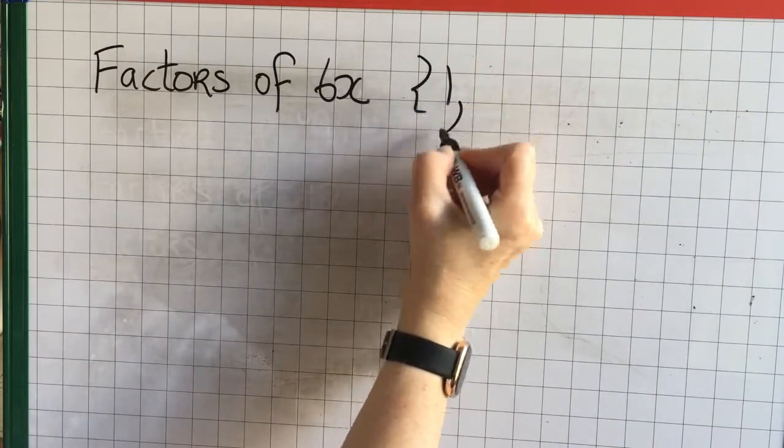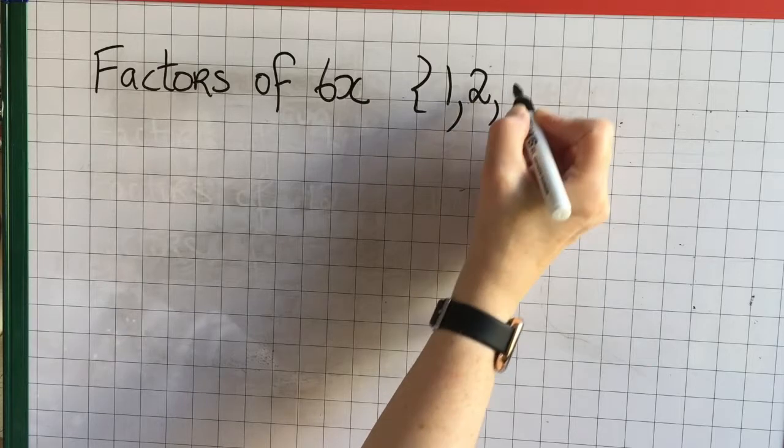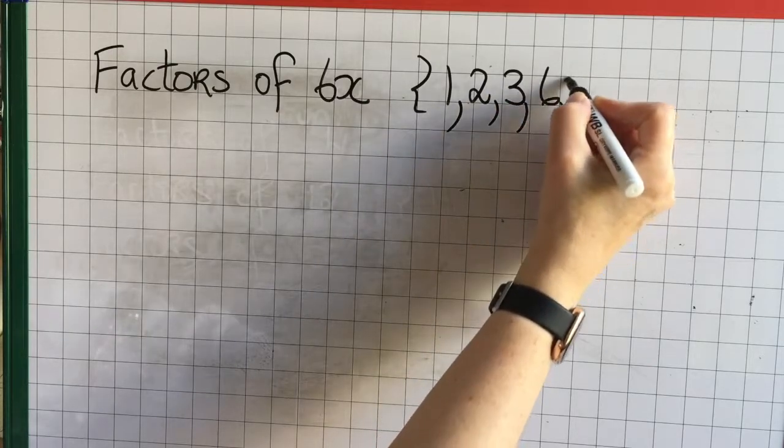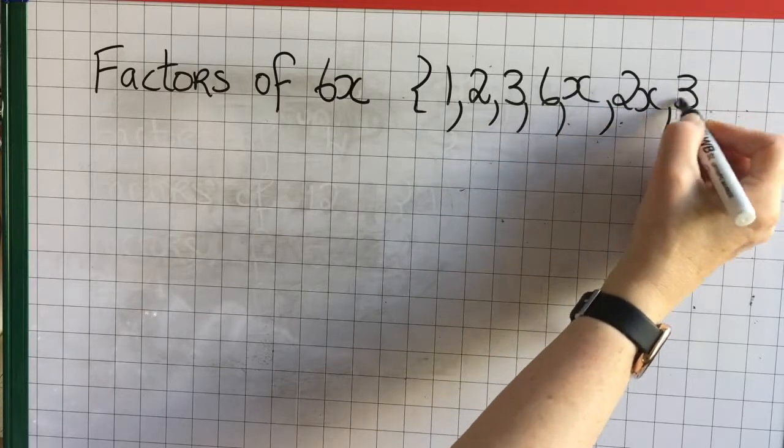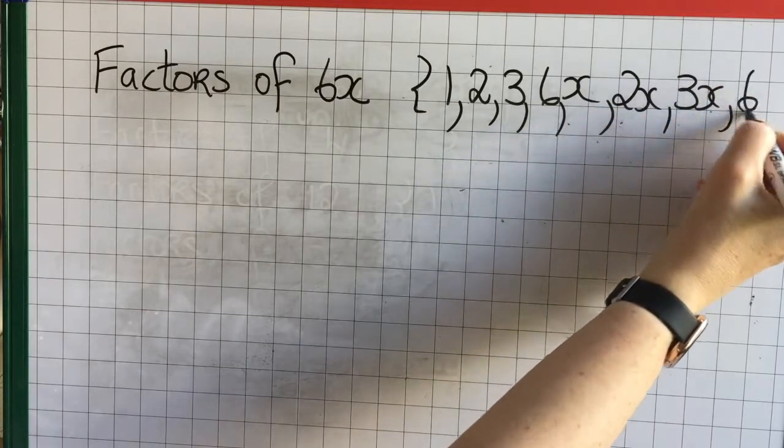The factors of 6x are the factors of 6 first: 1, 2, 3 and 6. So of 6x we also add in 1x, 2x, 3x and 6x.